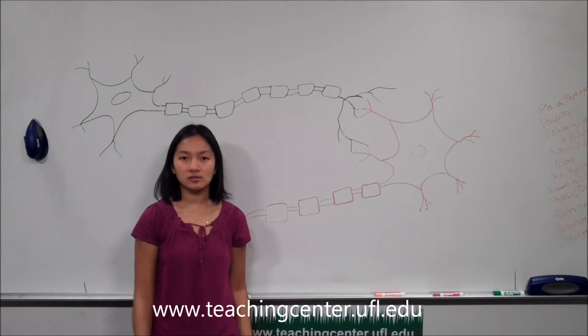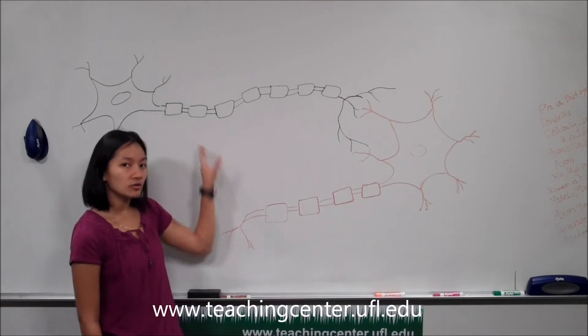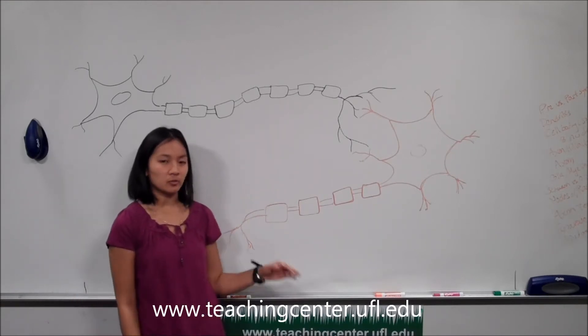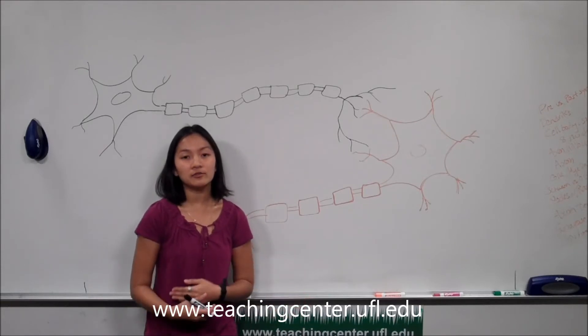A neuron is the most basic functional unit within the nervous system. And I've drawn here two typical neurons that you'll find within our nervous system, especially the peripheral nervous system.